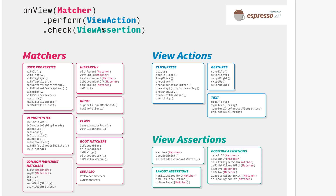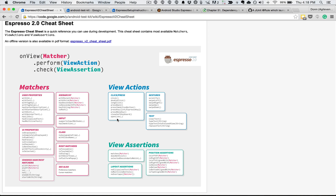Once you've created a matcher and have the view, you need to perform some view actions. You can click, double-click, press back, open a link, long click, clear the text out if it's an EditText, or type some text. Then you can perform an assertion on the view after performing the action. The view assertions check that it matches a particular matcher, that it doesn't exist, maybe there's no ellipsized text, or it's to the left of, above, or below another view. You can mix and match all these types. View assertions also reach back into the matchers, so you can dig deeper in your calls — everything is nicely chained together.